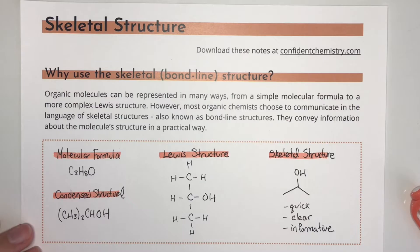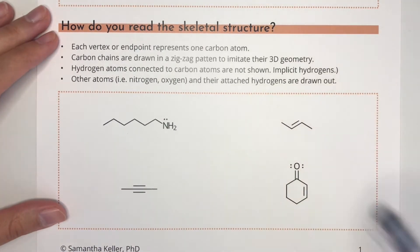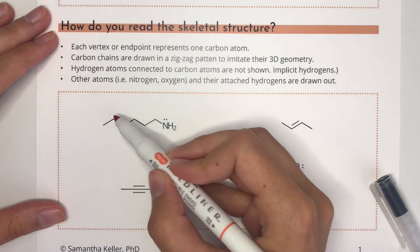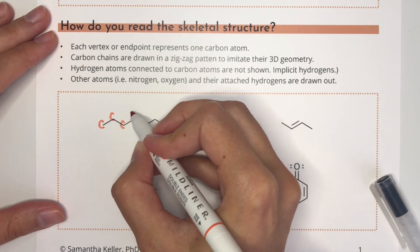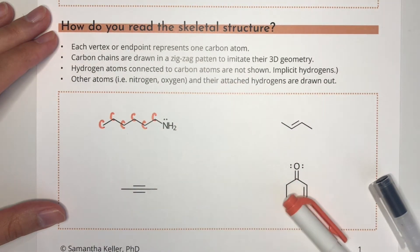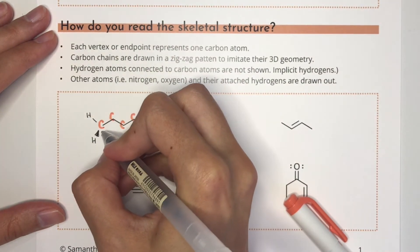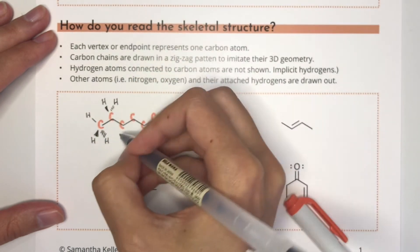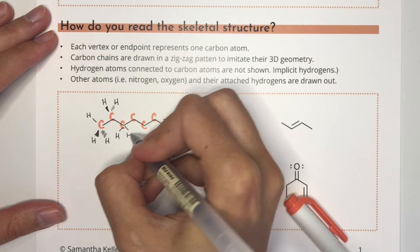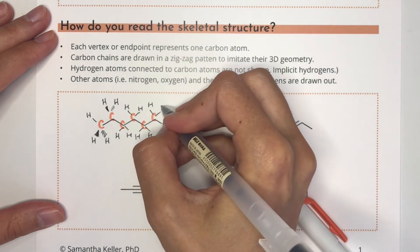So how do we learn to read these skeletal structures and get skilled at drawing them? Let's look at a few examples and dig out all the information they contain. The first molecule has a carbon skeleton and an amino functional group. Each of these points on the line represents one carbon atom. These singly bonded carbons are drawn in a zigzag pattern to represent their tetrahedral geometry. In these drawings, all of the hydrogens attached to the carbon atoms are left out — we call these implicit hydrogens. There are three implicit hydrogens on the end carbon because it only has one other bond, and the rest of the carbon atoms have two implicit hydrogens. Finally, don't forget the amino group, NH2.